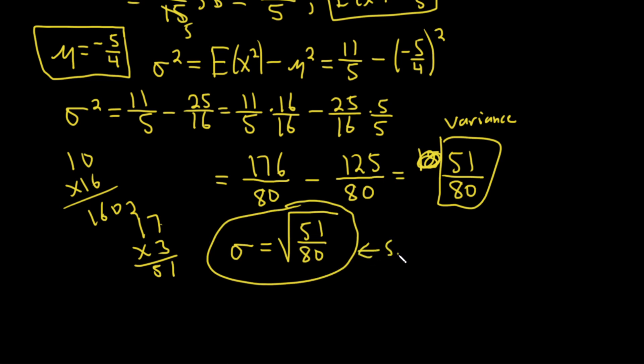We have everything here on screen. Here is our mean μ equals negative 5 fourths, variance σ squared equals 151 over 80, and standard deviation equals the square root of 151 over 80. It's an interesting problem where you have to be careful. A calculator would have been helpful, but it's good to work the mind. I hope this video has been helpful. Good luck.